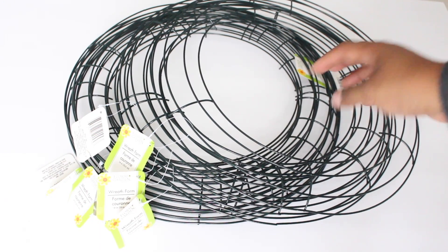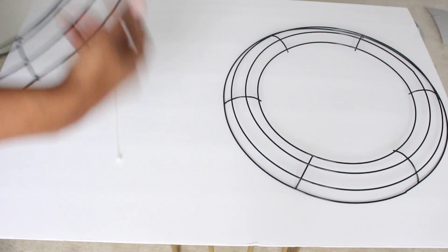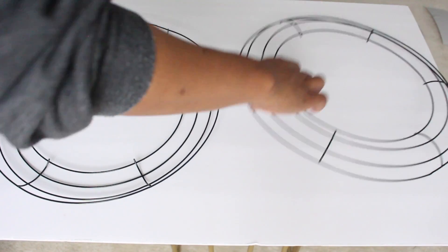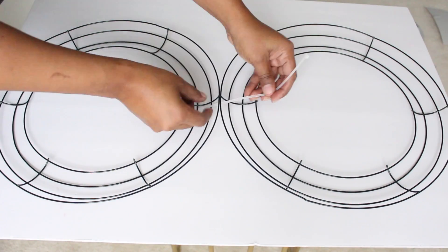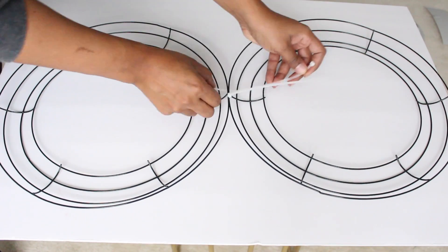Alright, for this project I purchased 12 wire wreath frames from the Dollar Tree. I started by flipping the frames over so that the curved side is face down. Then I attach the frames together using zip ties. Honestly, you can attach as many of these frames together as you want.